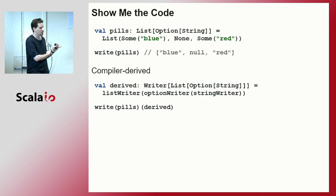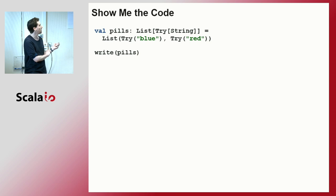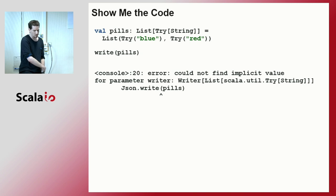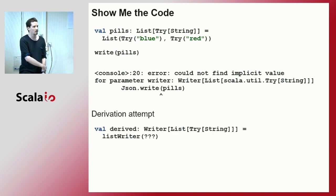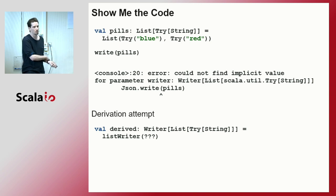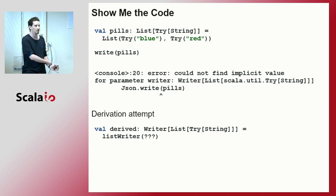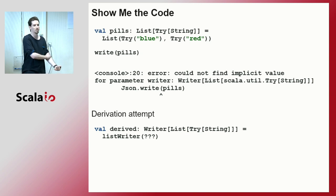Suppose we try to write a List of Try of String. The compiler gives a compilation error — it wasn't able to find a writer for a List of Try of String. That makes sense: we never taught the compiler how to write Tries. The compiler tried: it found the rule for lists, but for tries — no rules, no facts, I fail. And so it tells us we can't do that. This highlights how important good communication is. Whatever you didn't tell the compiler, it obviously won't know on its own. You have to teach it the right building blocks.